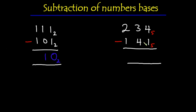Now let's move on to the next example. As I said before, we always start solving column by column from the right. We have 4 minus 1 which is 3, so I write 3 here. Then on the next column we have 3 minus 4 which is impossible. What we're going to do is borrow 1 from the next digit. Since we are dealing with base 5, any 1 that we borrow is equal to 5, so we have 5 plus 3 which is 8, and 8 minus 4 is 4. Then remember we took 1 from the 2, so we are left with 1, and 1 minus 1 is 0. The result is 043, which is the same as 43 in base 5.